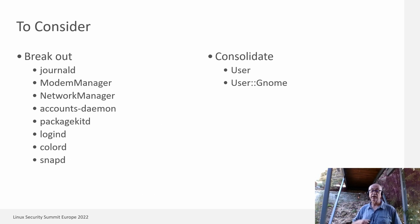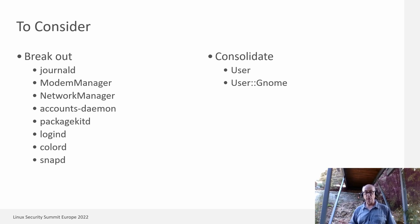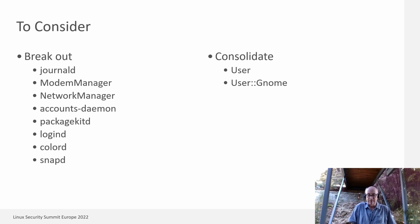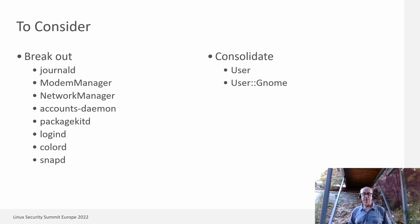Things we want to consider going forward: Do we want to break out journald? That might actually reduce some of the read-write ambiguity we've been carefully trying to avoid. A bunch of other services — modem manager, network manager, account daemon — we may break those out just because they're otherwise isolated and the sharing they do with other domains is actually pretty well under control. Do we want to consolidate user and user-gnome since they have mutual read-write access anyway? There are a couple of things GNOME does that user doesn't — GNOME is going to have some privileged accesses, so having that as its own domain might still make sense.